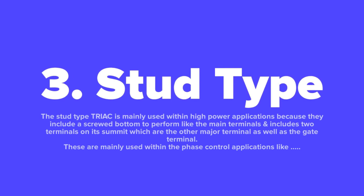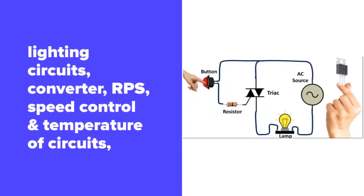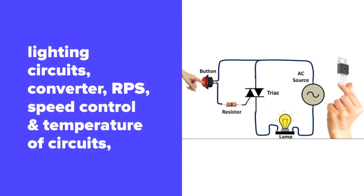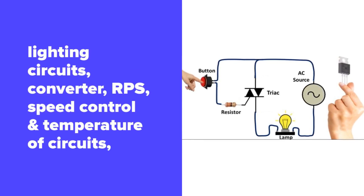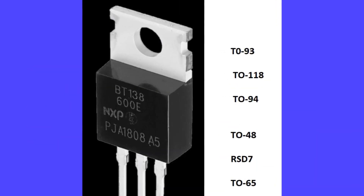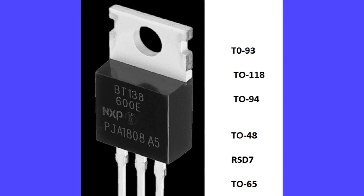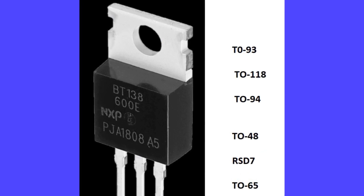The stud type TRIAC is mainly used in high power applications because it includes a screwed bottom that serves as the main terminal, and includes two terminals on its summit — the other main terminal and the gate terminal. These are mainly used in phase control applications like lighting circuits, converters, RPS, speed control, and temperature control circuits. Packages of the stud type TRIAC include T093, T0118, T094, T048, RSD7, and T065.